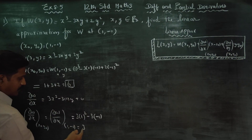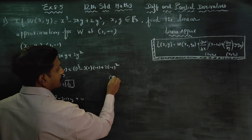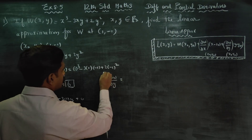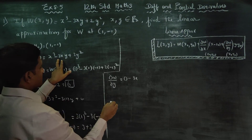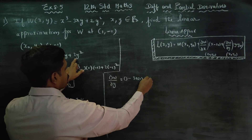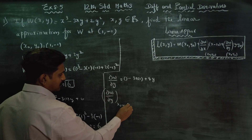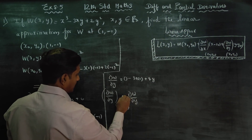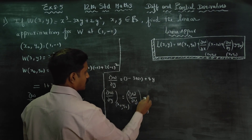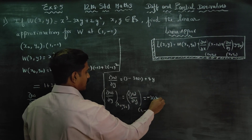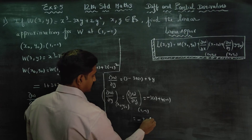Now, dou w by dou y. What is dou w by dou y? Substituting x = 1 and y = -1: minus 3 into 1 plus 4 into minus 1. Answer is minus 3 plus minus minus 4, answer is minus 7.